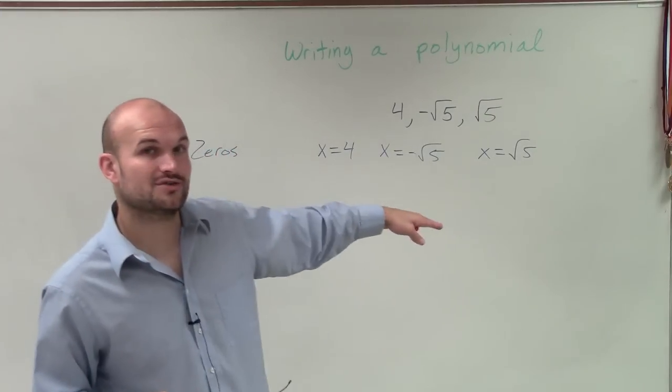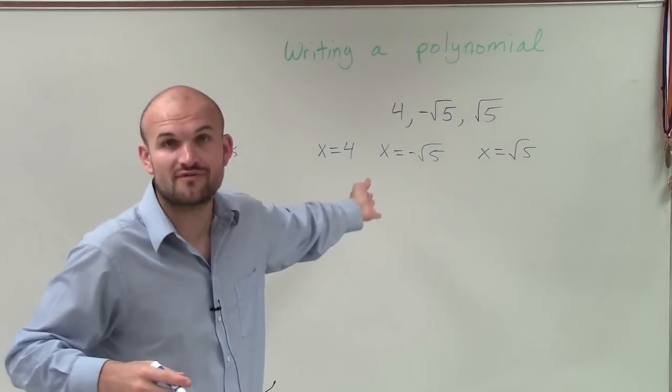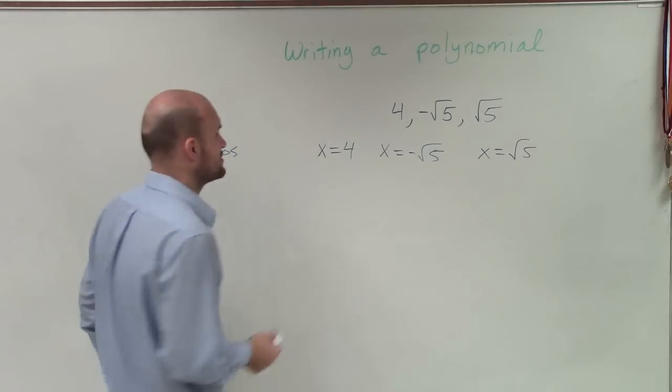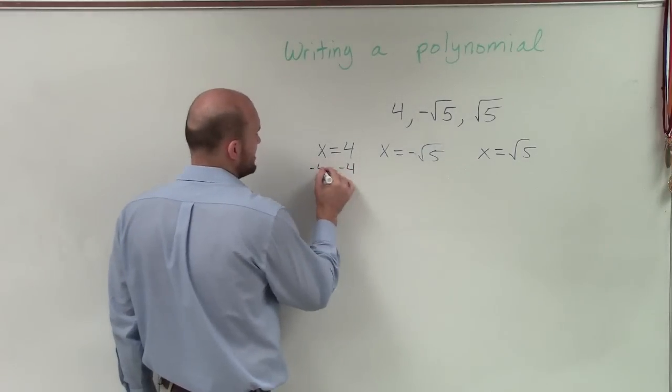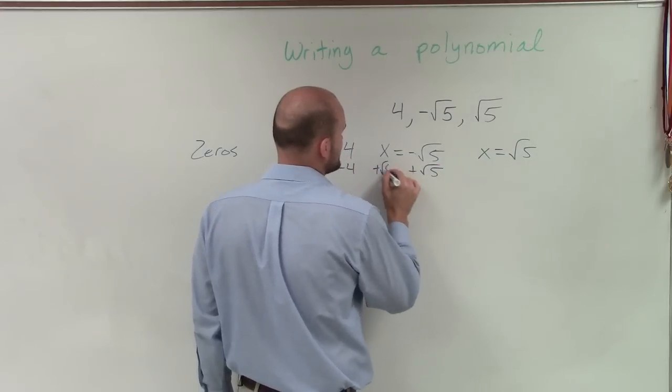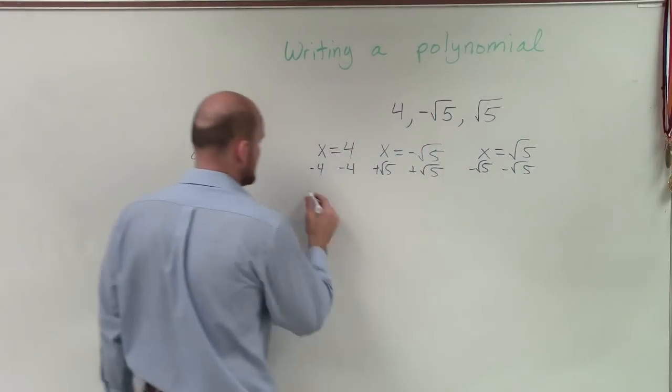Now, those are the zeros written as x equals, right? Because when we took a polynomial and found the zeros, that was our final answer. It would look like that. Now, we need to write them as our factors. So to do that, we need to set them equal to 0. And remember, we got them to be our factors by applying the zero product property.